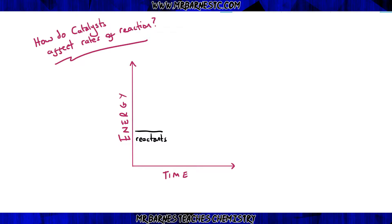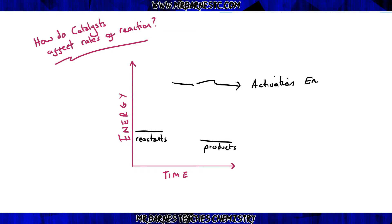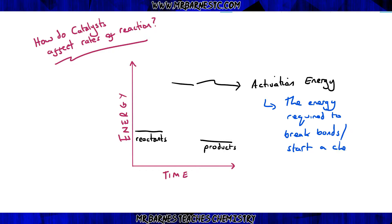I've got a graph showing energy against time. As you can see I've got the reactants on the left and the products on the right. This line that I'm drawing up here is called the activation energy, which is simply the energy required to actually break the bonds to start the reaction.